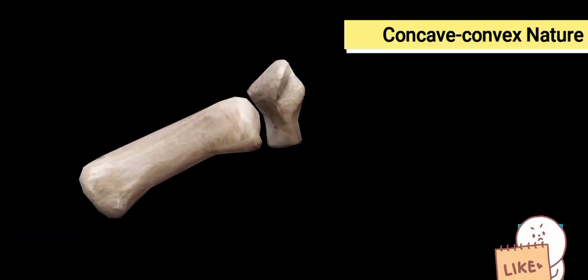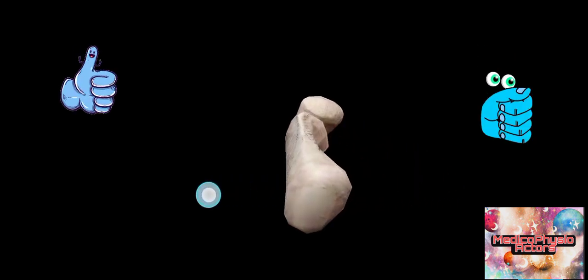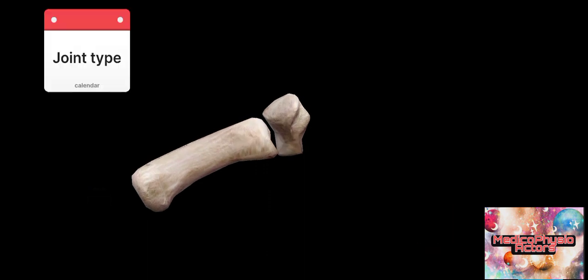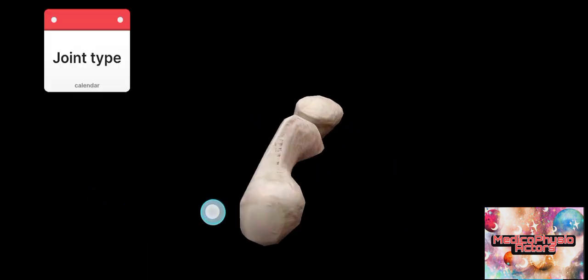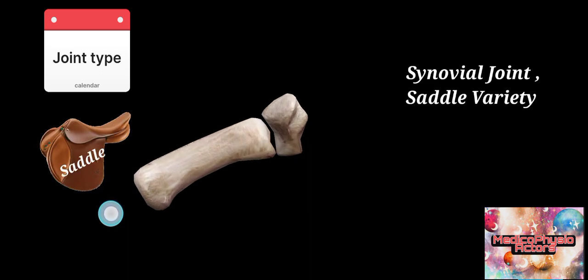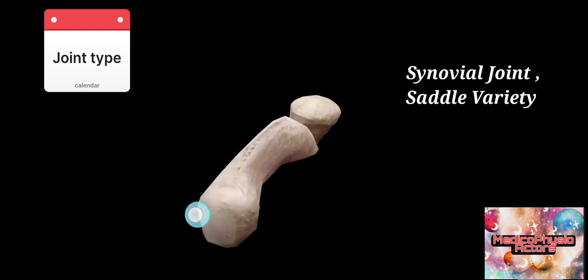The articulating surface of trapezium is concave in the sagittal plane while convex in the frontal plane. This concavo-convex nature of articular surfaces permits a wide range of motion. With this concavo-convex nature and saddle appearance at the articulating surfaces, the joint is a saddle variety of synovial joint.